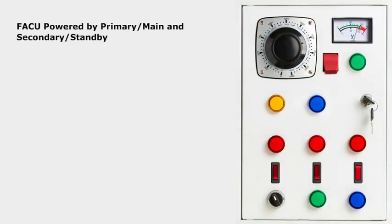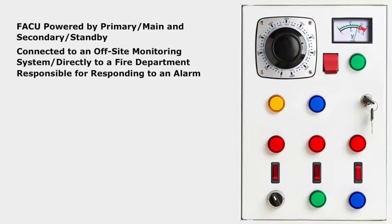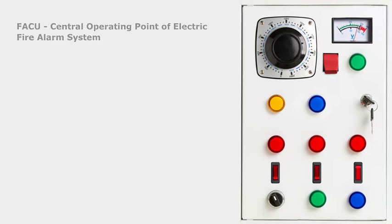The FACU will be powered by a primary or main power supply and a secondary or standby power supply. The system can be connected to an off-site monitoring system or directly to a fire department that will be responsible for responding to an alarm. The FACU is the central operating point of the electric fire alarm system.